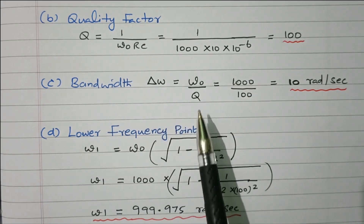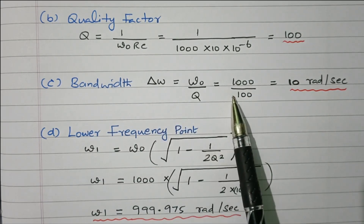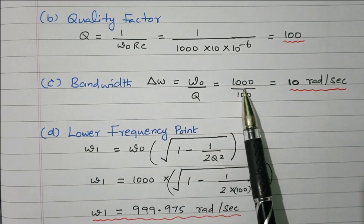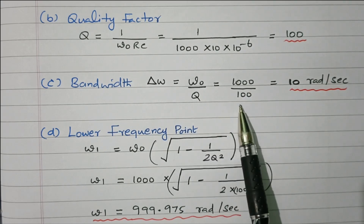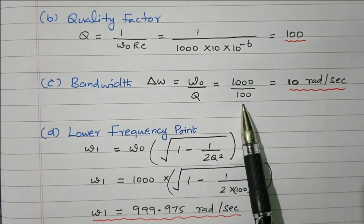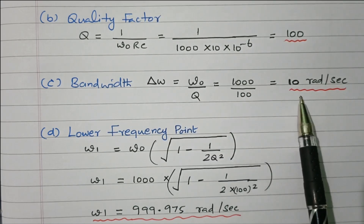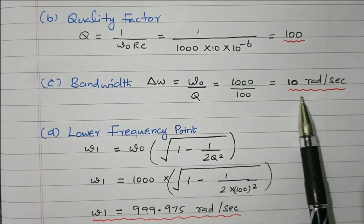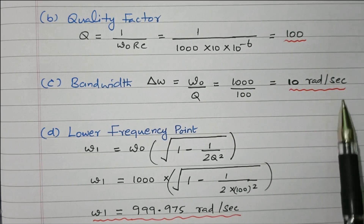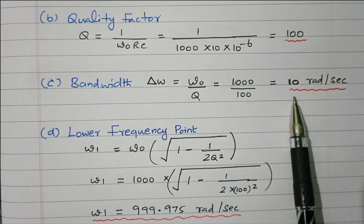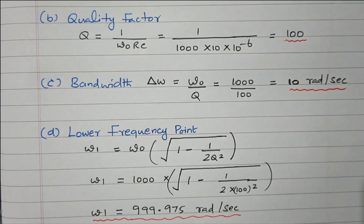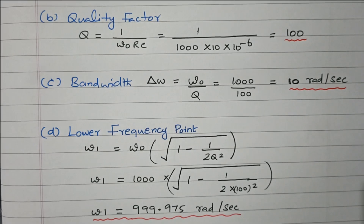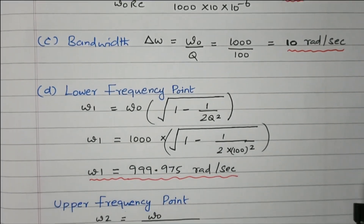Next, the third parameter: bandwidth. Delta omega equals omega naught divided by Q. Omega naught is 1000 and Q is 100, so 1000 divided by 100 gives 10 radian per second. So the bandwidth is 10 radian per second.